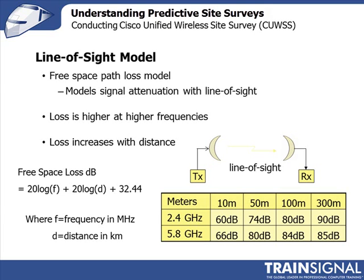We said if you're operating at the 2.4 GHz band, your signal will go further than if you're operating at the 5 GHz band. That's the free space path loss model predicting that. In this table, if I'm transmitting in the 2.4 GHz band and I travel 10 meters, my loss will be 60 dB. If I travel 100 meters, my loss would be 80 dB. It's a simple model calculating loss based on distance traveled and the frequency I'm operating on.